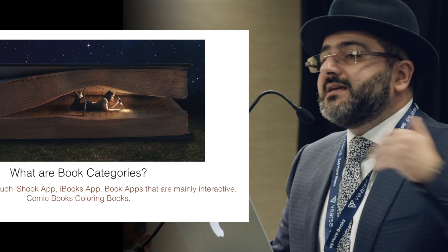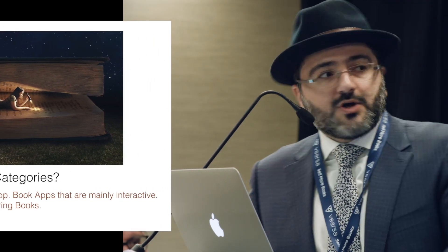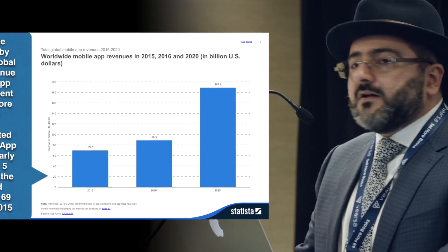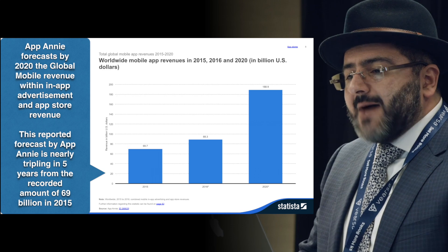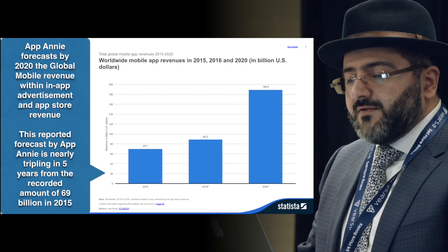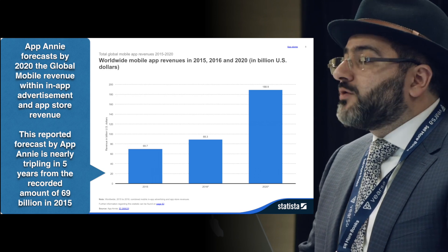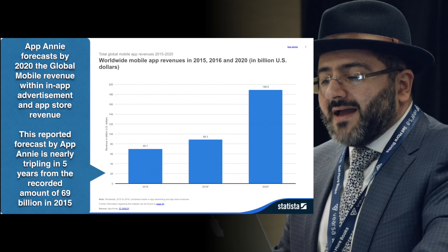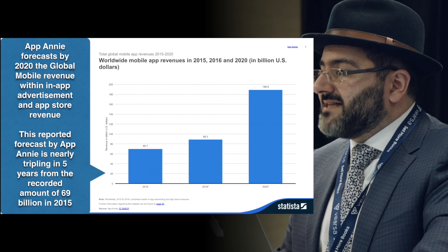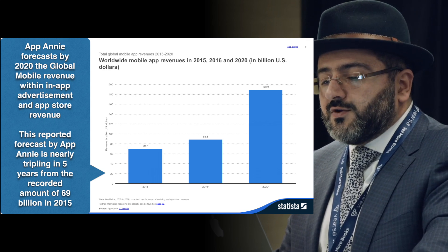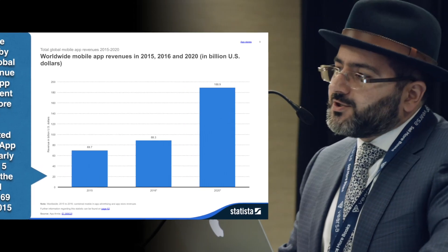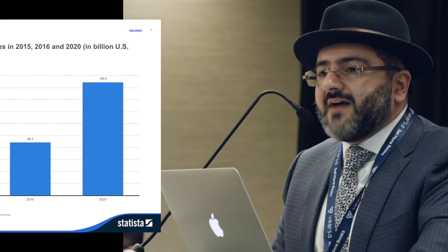We're going to show the worldwide mobile app revenues of 2015, 2016, and 2020. App Annie forecasts that by 2020, global mobile revenue within in-app advertising and app store revenue will be about $188 billion. App Annie also projects $88 billion in 2016, and as of 2015, showed revenue of $69 billion. That means within the next five years, App Annie projects a three-time growth in revenue from advertisement and app sales.